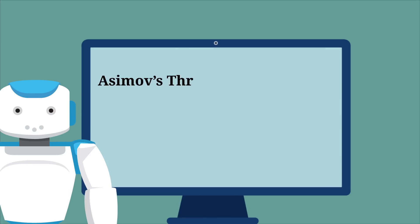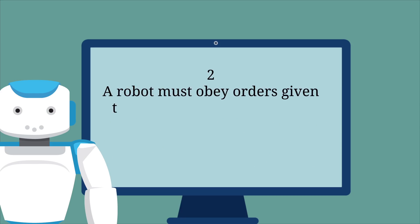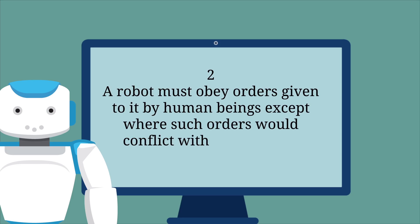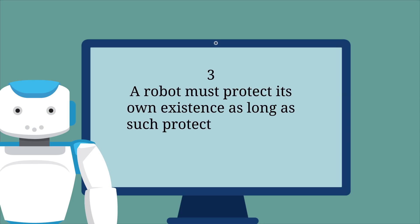Top-down is akin to Isaac Asimov's three laws of robotics. Namely, that one, a robot may not injure a human being, or through inaction, allow a human being to come to harm. Two, a robot must obey orders given to it by human beings except where such orders would conflict with the first law. And three, a robot must protect its own existence as long as such protection does not conflict with the first or second law.